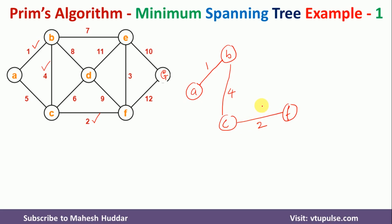Now, considering the neighbors of B, C, and F: the neighbors of B remaining are E and D with weights 7 and 8 respectively. The remaining neighbor of C is D with weight 6. The neighbors of F are D, E, and G. The smallest weight is F to E with weight 3. So I will create node E, draw the edge, and write the weight as 3.